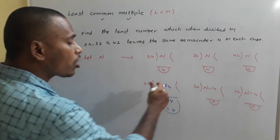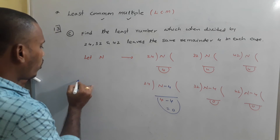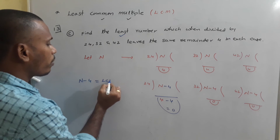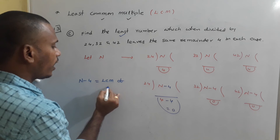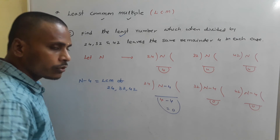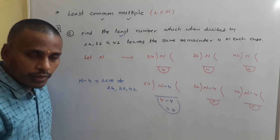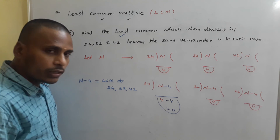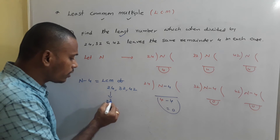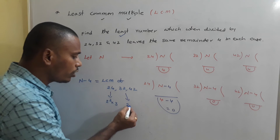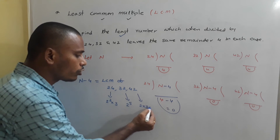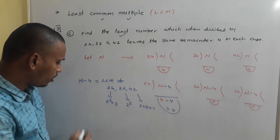So N − 4 is a common multiple of 24, 32, and 42. Since we want the least number, N − 4 = LCM(24, 32, 42). We can use prime factorization: 24 = 2³ × 3, 32 = 2⁵, 42 = 2 × 3 × 7.